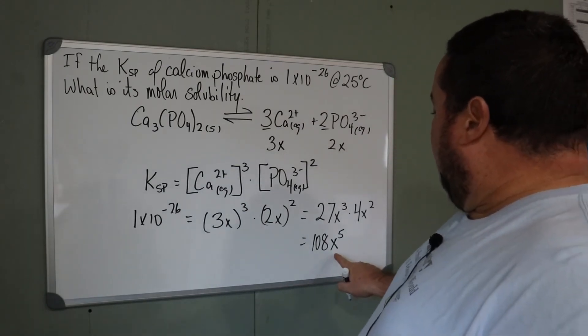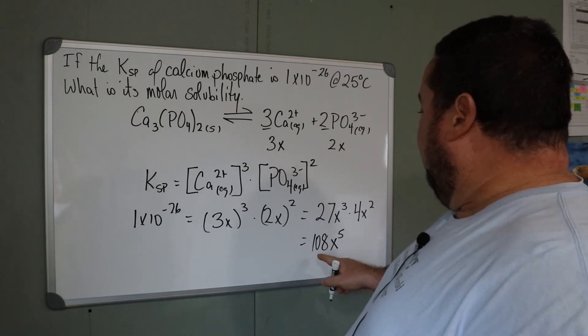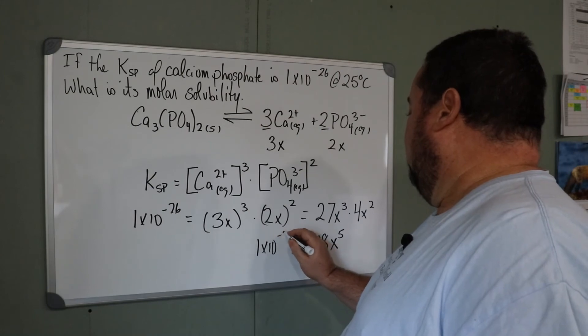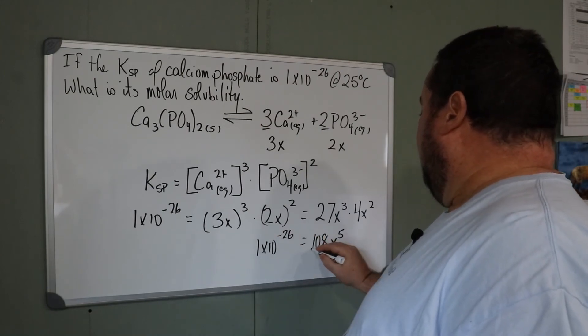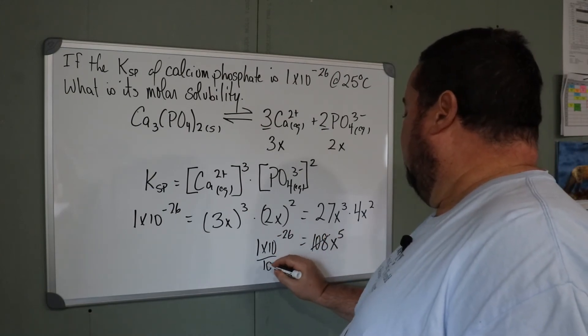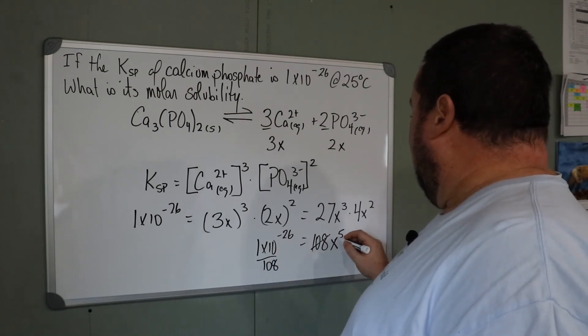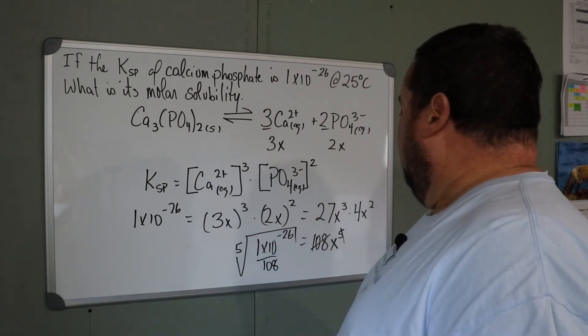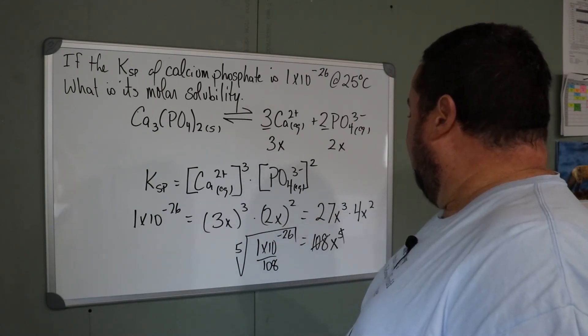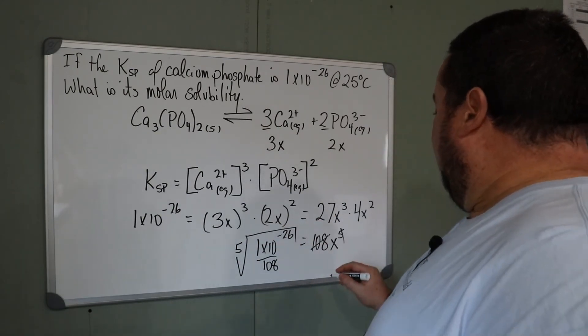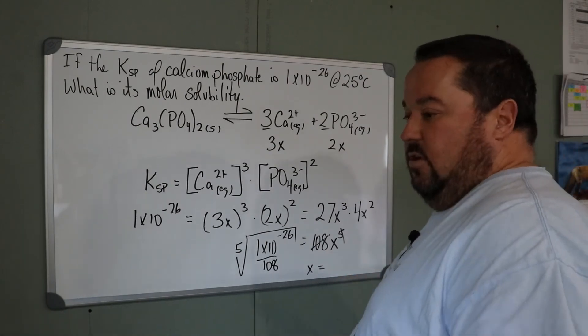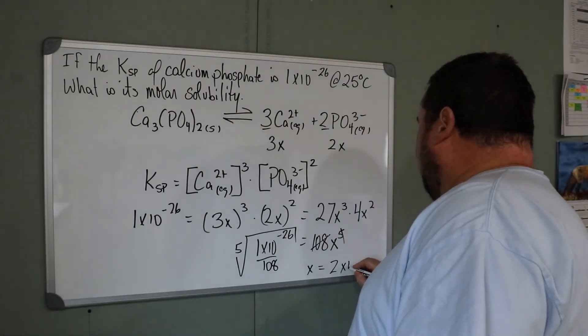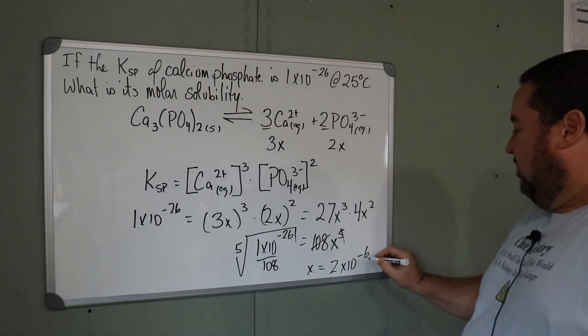So in order to calculate the value of X, we're going to divide each side by 108 and then take the fifth root. So X is equal to 2 times 10 to the -6.